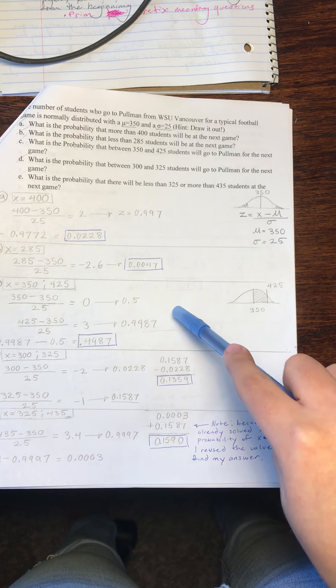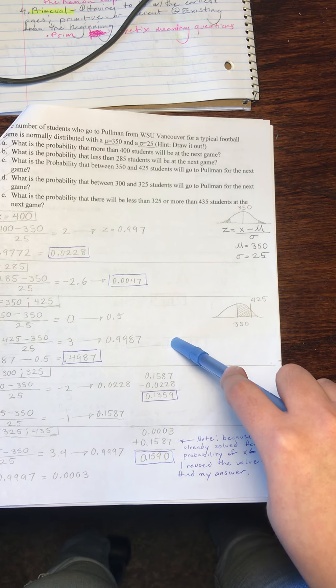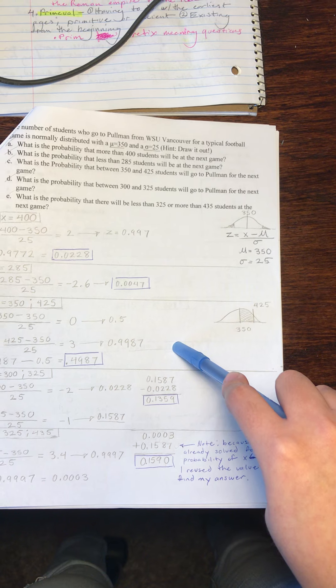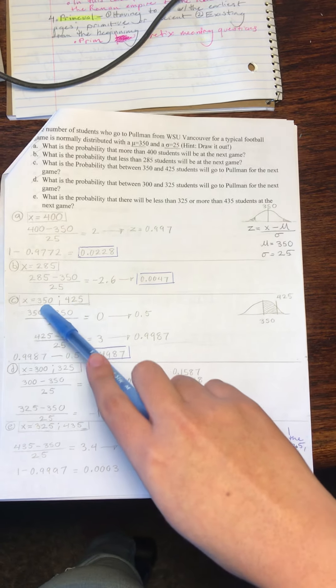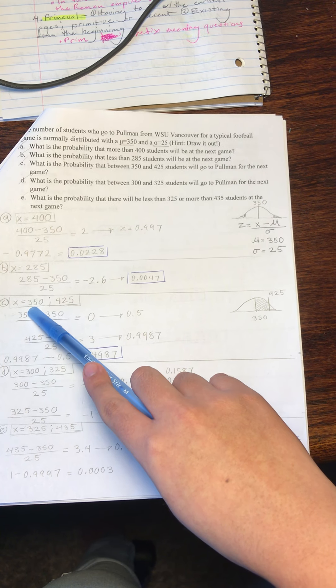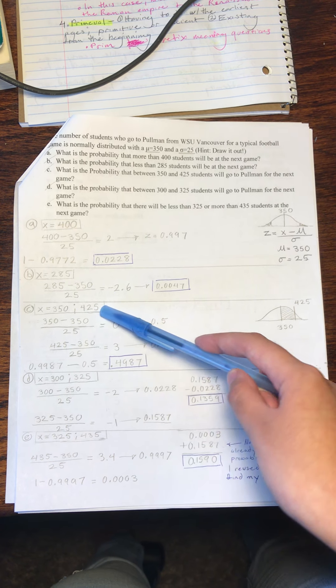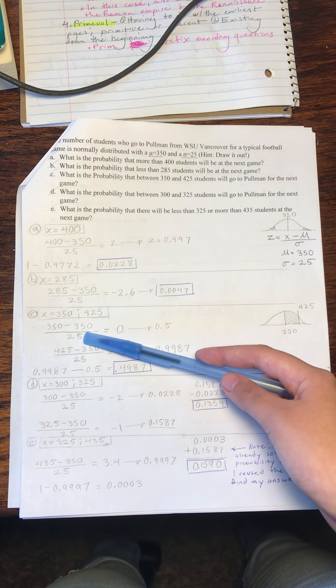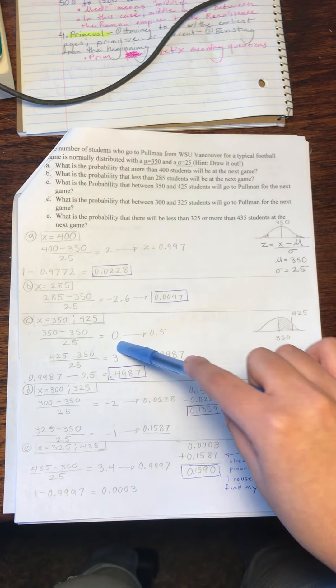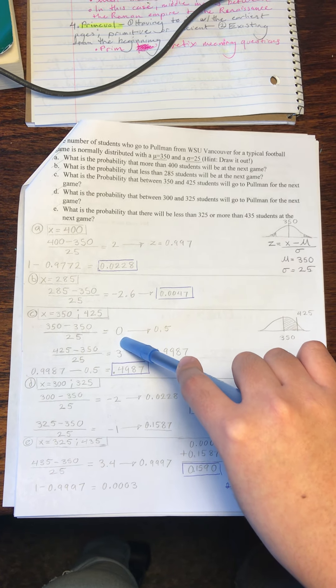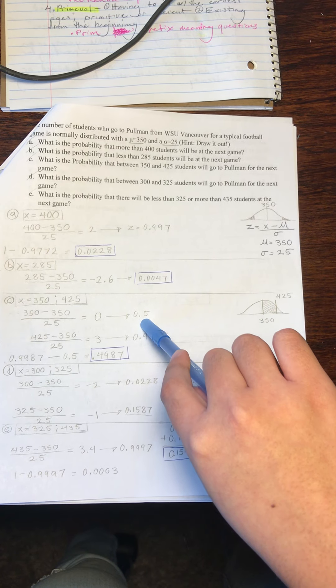For part C, this time we're looking for the probability that between 350 and 425 students will go to Pullman for the next game. We will identify our x's as 350 and 425, and we will solve these separately in two equations. For the first equation, we will take 350 minus 350 over 25, that gives us 0. When we look this up on our z table, we end up with 0.5.